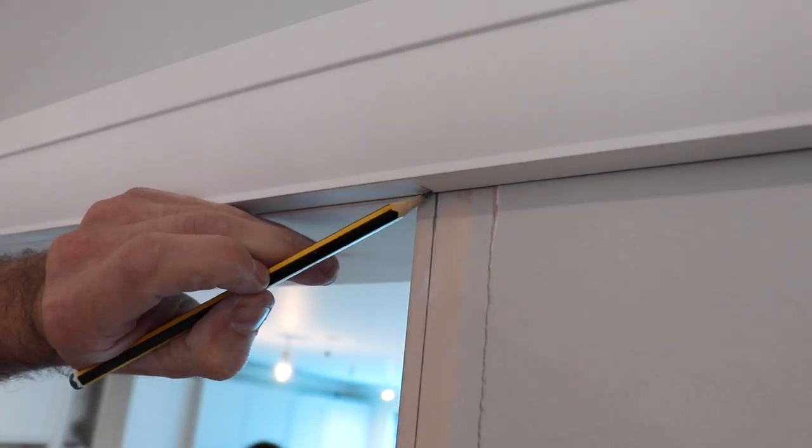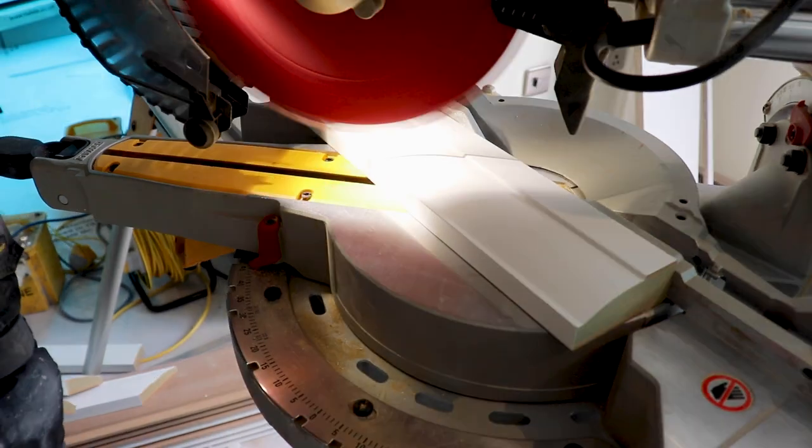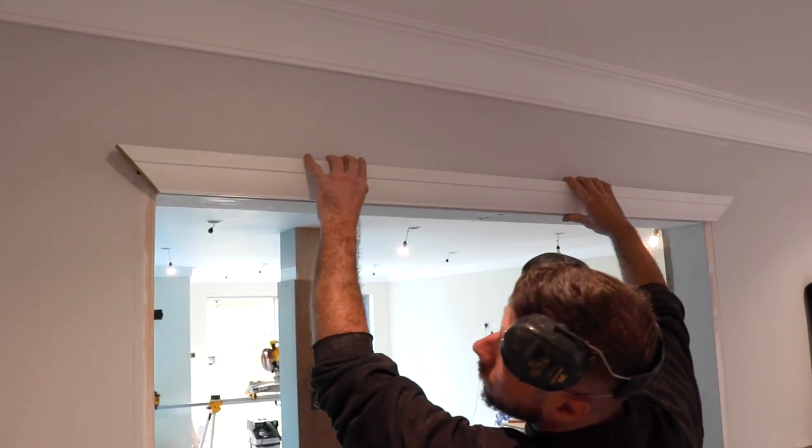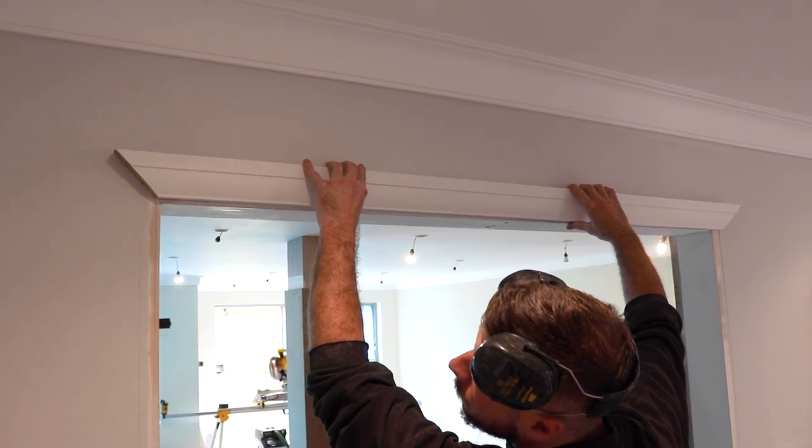Once we've got our second mitre marking we can go back to the chop saw and make our cut. Our header piece is now cut and it's now time for us to cut down the side pieces of architrave which are also known as uprights.